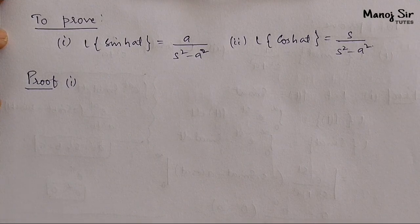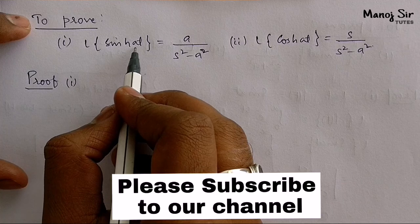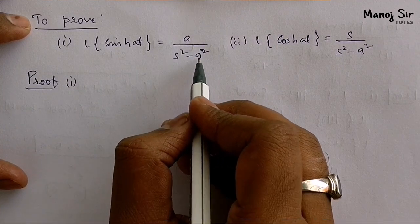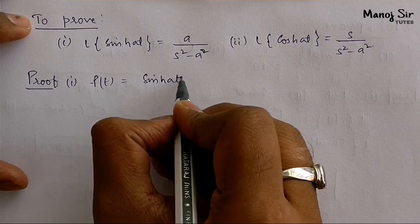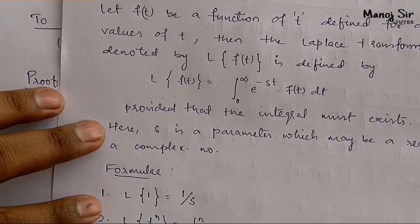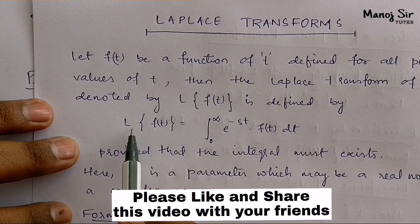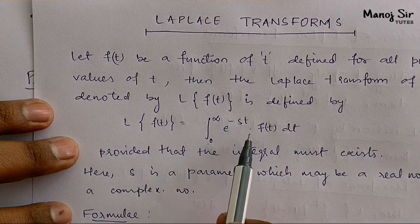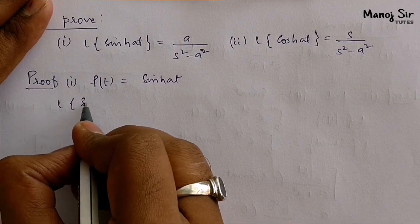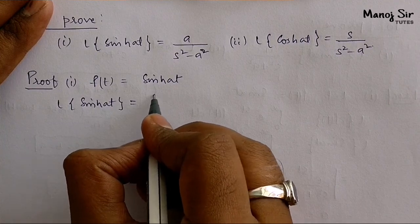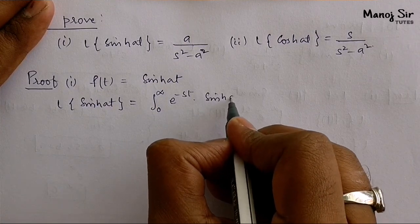Hey guys, what's up! In this video we are going to prove two formulae. The first one is: Laplace of sine hyperbolic at equals a upon s squared minus a squared. Here f of t equals sine hyperbolic at. We are going to use the standard formula for Laplace transform, that is: Laplace of f of t equals integration from 0 to infinity of e to the power minus st into f of t dt. So Laplace of sine hyperbolic at equals integration from 0 to infinity of e to the power minus st into sine hyperbolic at dt.